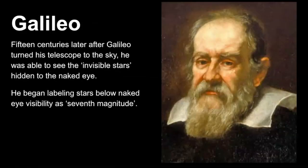Now fast-forwarding to Galileo's time — when he looked at the night sky through his telescope, he was able to see stars that you wouldn't normally see with the naked eye because they're just too faint. So he started labeling these invisible stars as seventh magnitude, continuing Hipparchus's magnitude scale but also expanding on it.